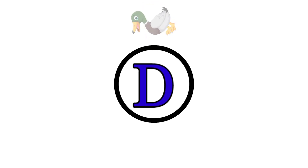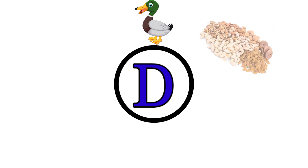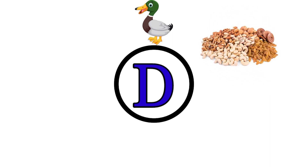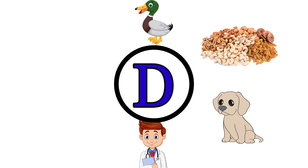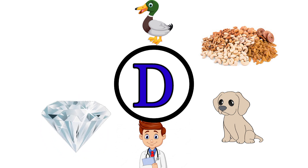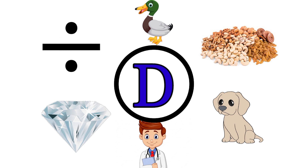D. D for duck. Duck means battak. D for dry fruits. Dry fruit means dry fruits. D for dog. Dog means kutta. D for doctor. Doctor means daktar. D for diamond. Diamond means heera.